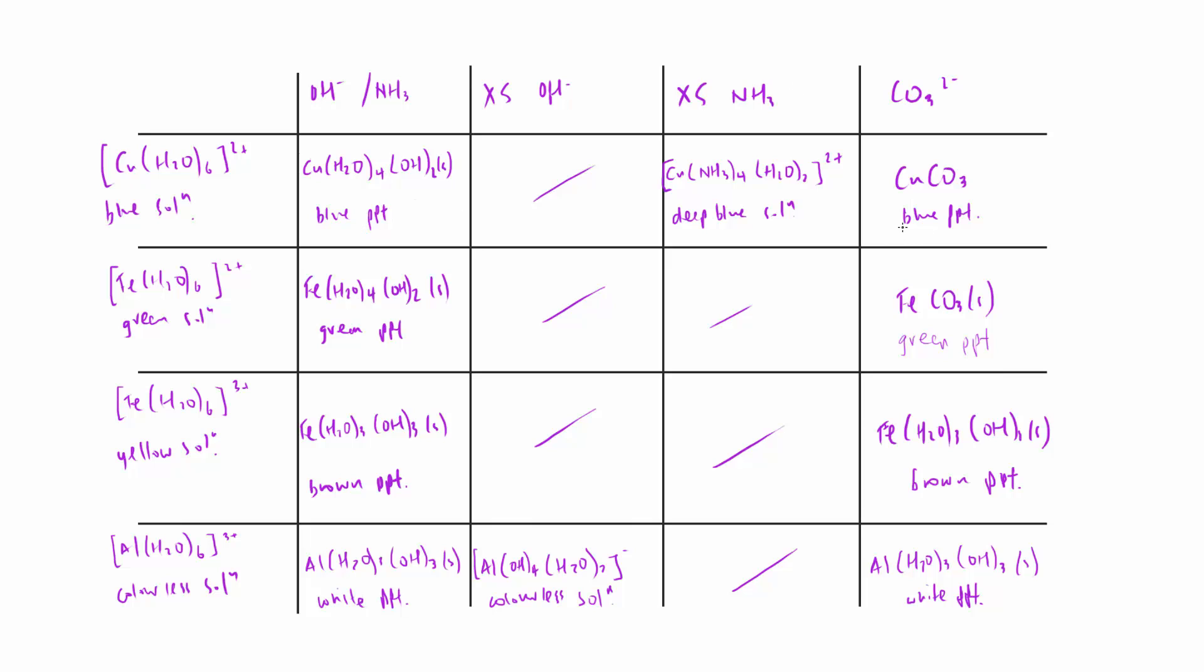The colors are pretty easy - they just stay the same, basically, once you've got that first column going across. The 3+ ions react exactly the same way in the case of hydroxide and ammonia and then the carbonate. The only differences are the excess ones.